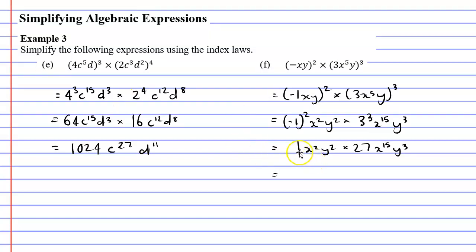1 times 27 is 27. So I multiply my numbers and then add my powers. 2 plus 15 is 17, so I've got x to the power of 17. And 2 plus 3 is 5, so I have y to the power of 5. That gives us 27x to the power of 17, y to the power of 5.